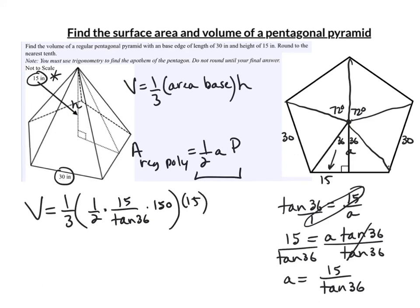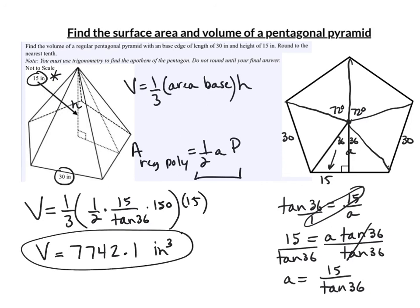Entering all of this in the calculator, I get 7,742.1 to the nearest tenth. That would be cubic inches, or inches cubed. And it is done — not bad, it is good. Thank you.